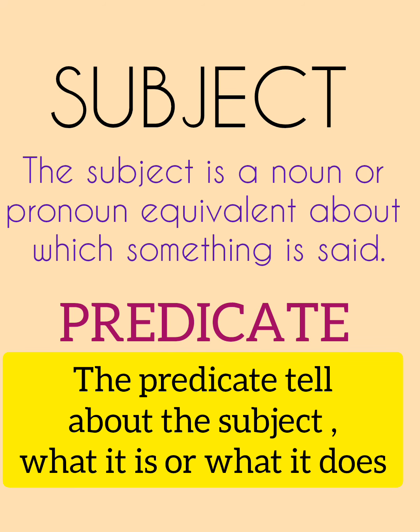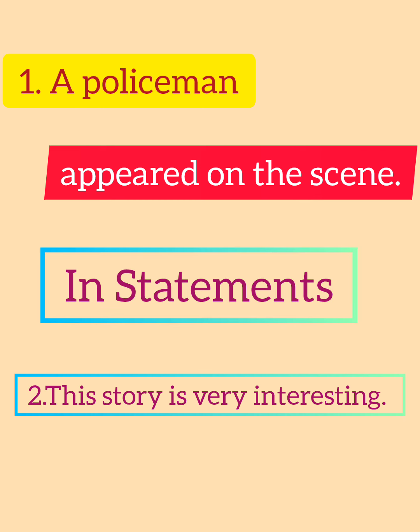Subject and Predicate. Every sentence is made up of two parts. Let's look at the sentence: 'A policeman appeared on the scene.' It is about a policeman, so 'a policeman' is the first part. The second part says something about a policeman: 'appeared on the scene.' The first part that names what the sentence is about is called the subject. The second part that says something about the subject is called the predicate.